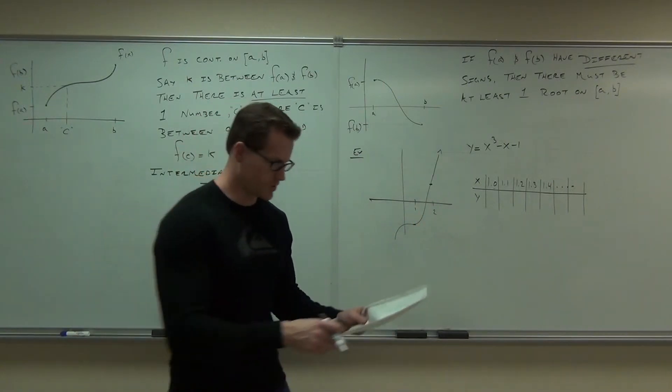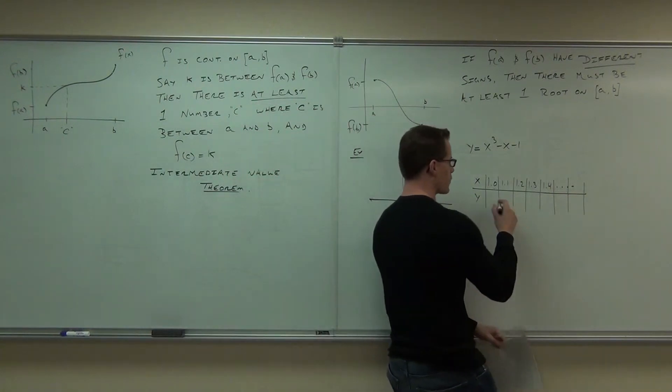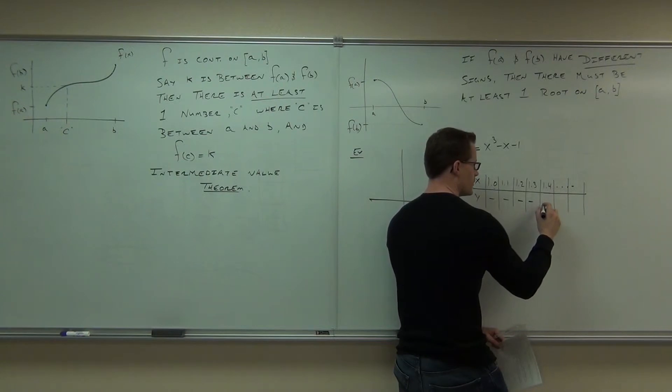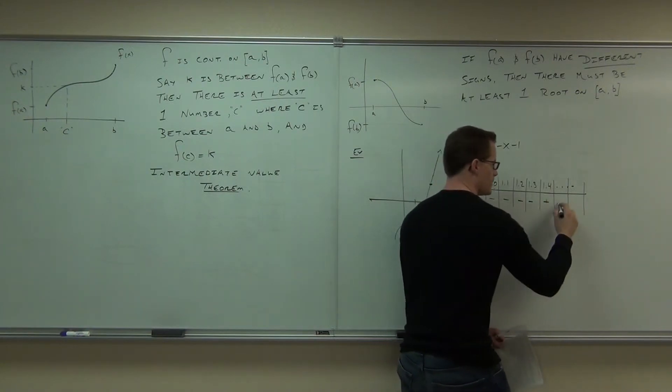And I think if I've done this right, it's between 1.3 and 1.4. So this would be negative, negative, negative, negative, positive, positive, positive.